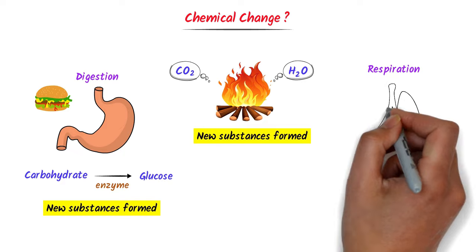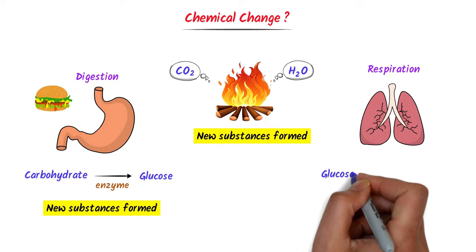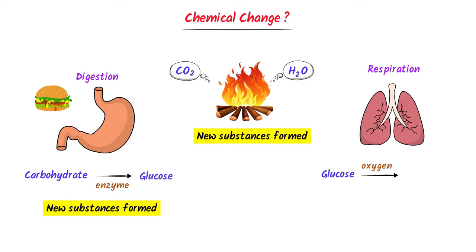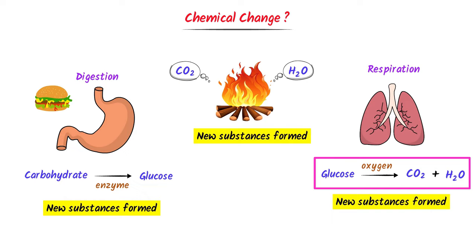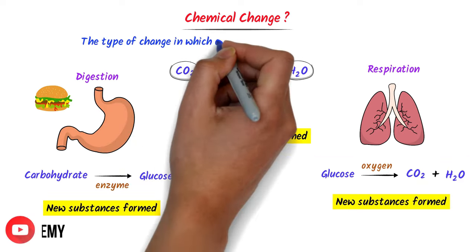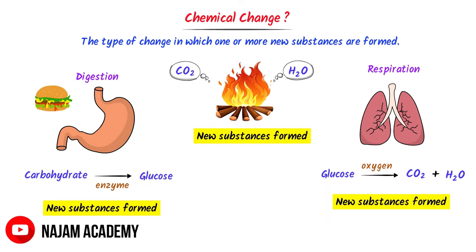Thirdly, consider respiration. Inside your cell, glucose in the presence of oxygen is converted into carbon dioxide gas and water vapor — new substances are formed. Therefore, we define chemical change as the type of change in which one or more new substances are formed, like burning of food, digestion, respiration, etc.